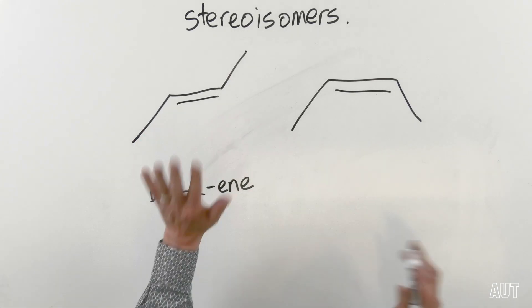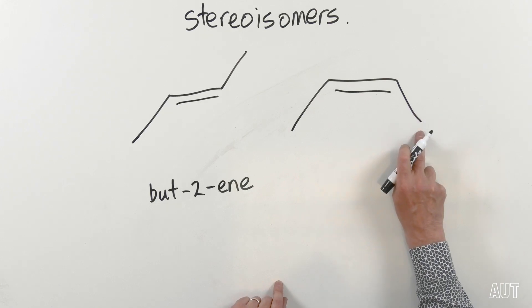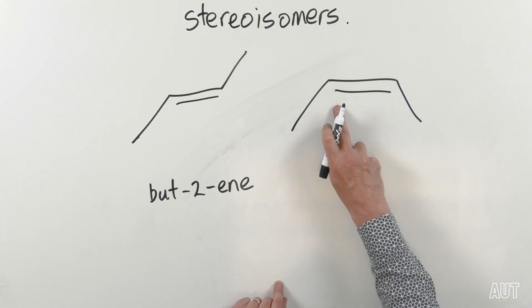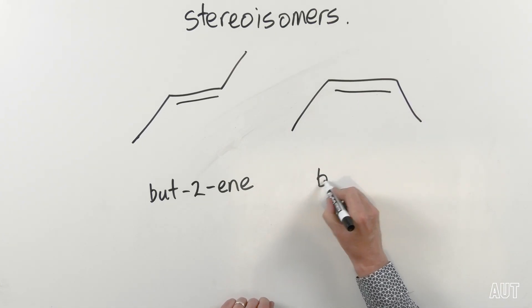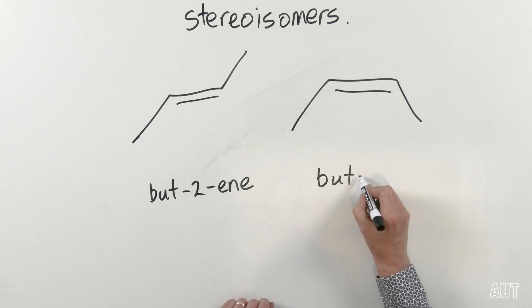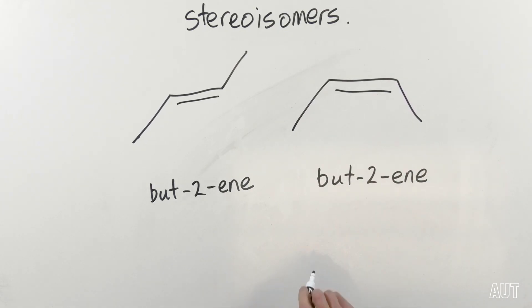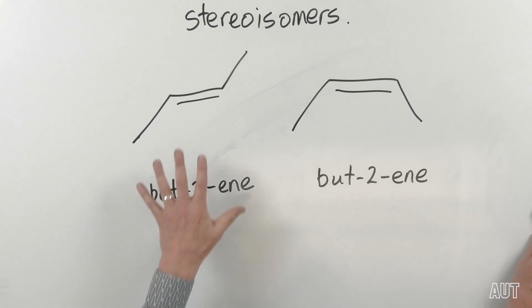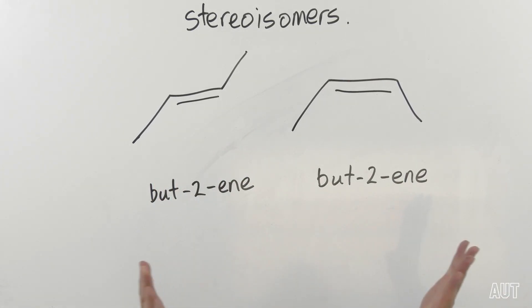Okay, so that makes sense. But what about this one here? One, two, three, four — double bond at carbon two — so this is also bute-2-ene. Now, for some reason I've drawn them differently. Is there any actual difference between them in real life?